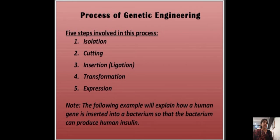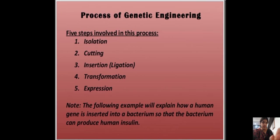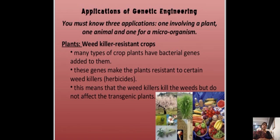For example, the human insulin gene is inserted into a bacterium so that the bacterium can produce human insulin. Human insulin is a chemical produced in the human body. You must know three applications: one involving a plant, one involving an animal, and one involving a microorganism.